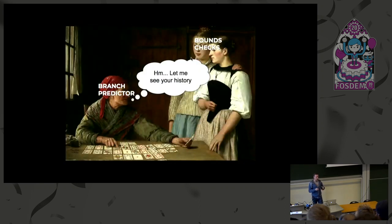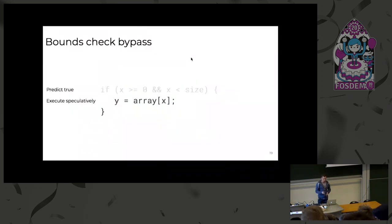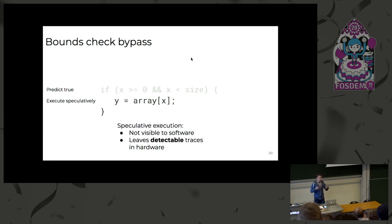The branch predictor looks at the history of this branch or similar branches. In our example it passed once, again, and once more — three passes. Well, the fourth time probably the same thing will happen. The CPU, being naive, believes the branch predictor and starts to execute this memory access and all following code speculatively. Speculatively means it does all the computations and loads all data necessary, but does not commit the results. All temporary results during speculative execution are stored in internal CPU buffers and are not visible to software. Eventually, when the CPU detects the prediction was wrong, it discards the results and starts over from the correct branch.